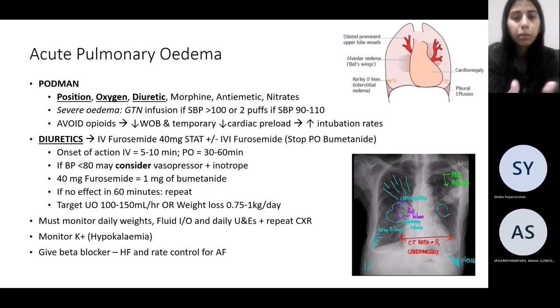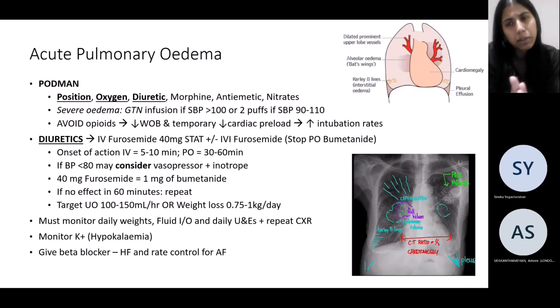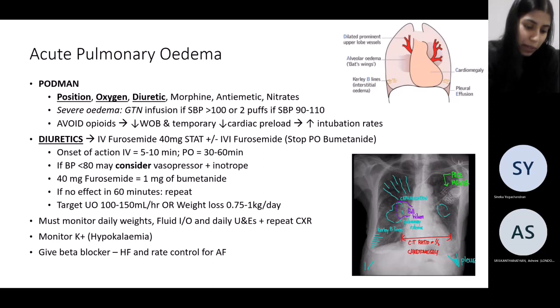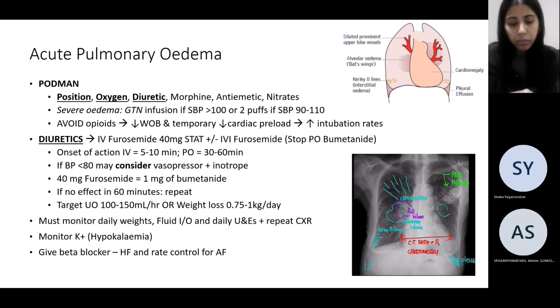Target urine output is roughly 100ml per hour. Always remember if they're already on bumetanide, stop the oral bumetanide because you're covering them with IV diuretics — you can switch back once they've improved from the acute stage. Always monitor potassium, as diuretics can cause hypokalemia.